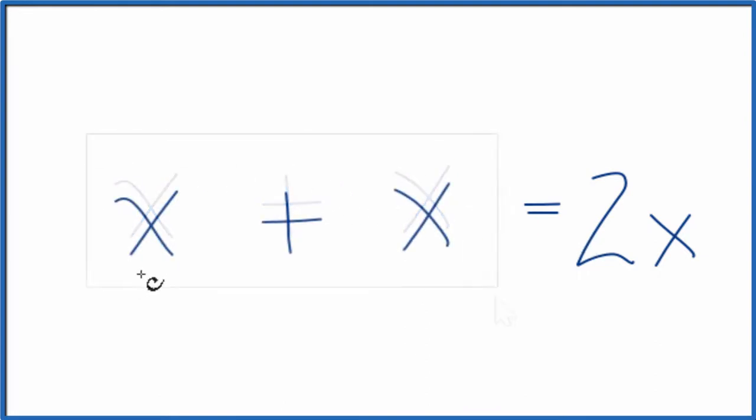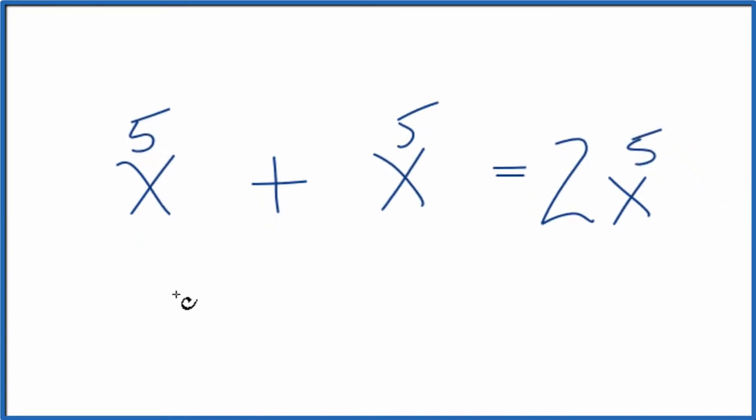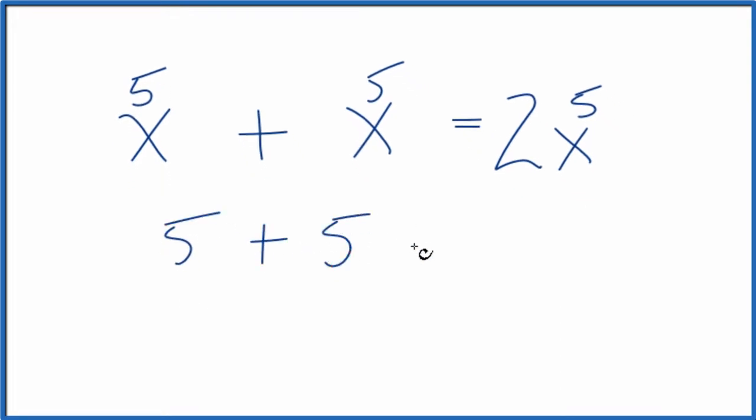And we can test this. Let's put a value in for x and see if this is a true statement. Both sides are equal. So let's put 5 in for x. So 5 plus 5 is equal to 2 times 5. 5 plus 5 is 10. 2 times 5, that's 10. So that's a true statement.